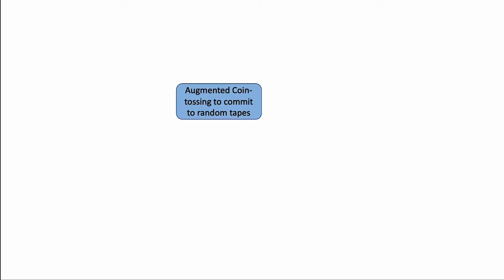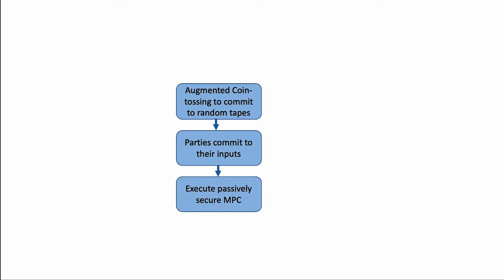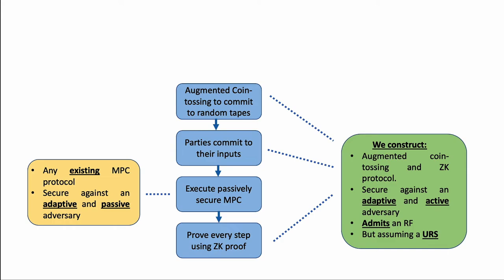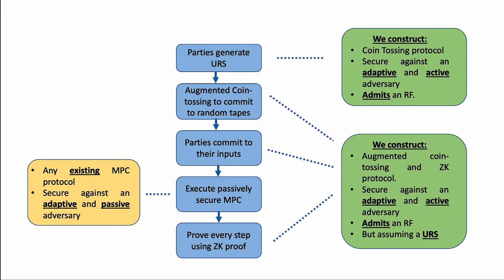Our construction at a high level can be seen as follows. First, there is an augmented coin tossing phase, which allows the parties to generate and commit to their random tapes. Then the parties commit to their inputs and execute a passively secure MPC protocol, proving each step using some zero-knowledge proof. For this step, we can use any existing MPC protocol that is adaptively and passively secure. We construct an augmented coin tossing protocol and a ZK protocol that are adaptively and actively secure and admit an RF. These constructions assume a URS (uniform random string). To have minimal trust assumptions, we instantiate the URS by a coin tossing protocol that is also adaptively and actively secure and admits an RF.